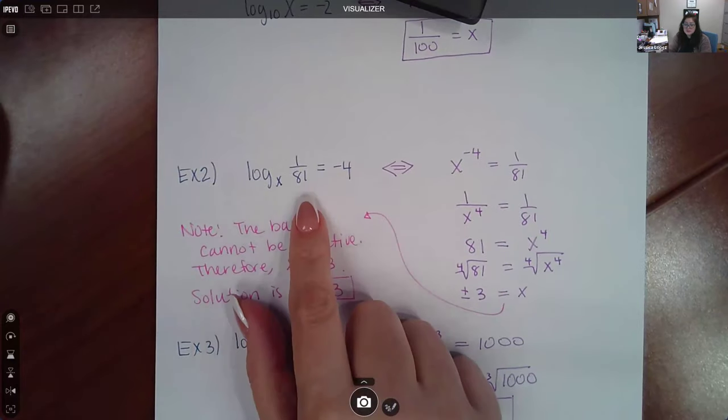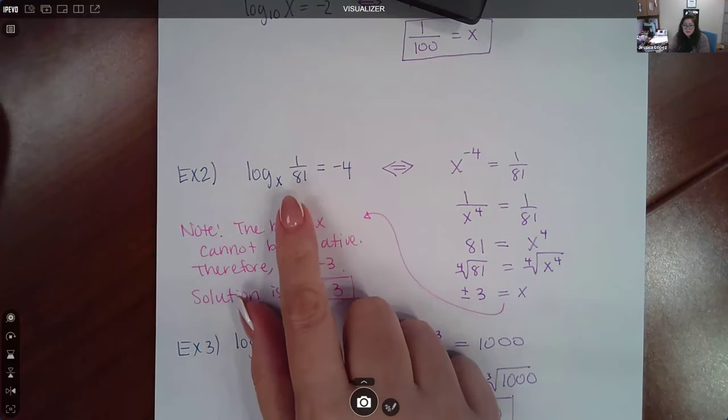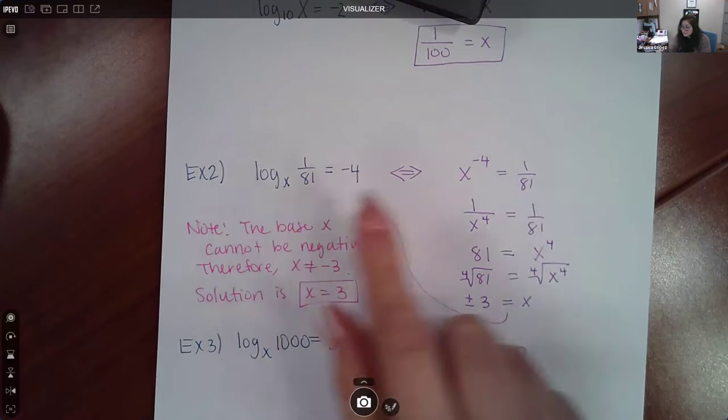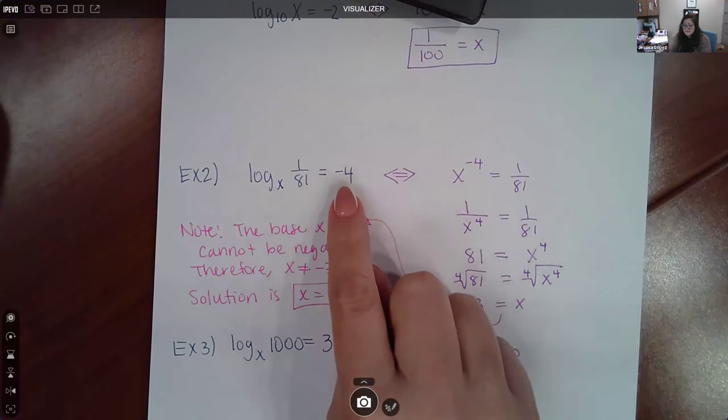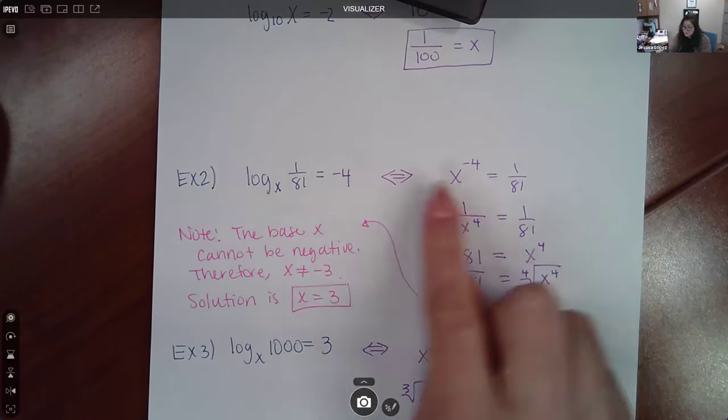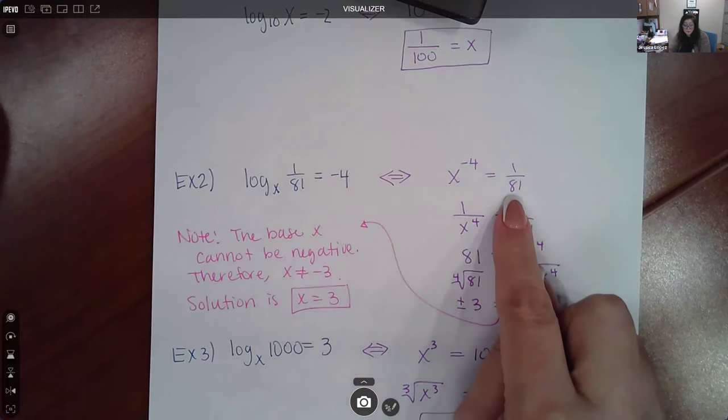Similarly, we can do the same thing for this type of problem. So again, our base here is X, so we have the base X, and then the exponent will become negative 4, and it will be equal to the argument 1 over 81.